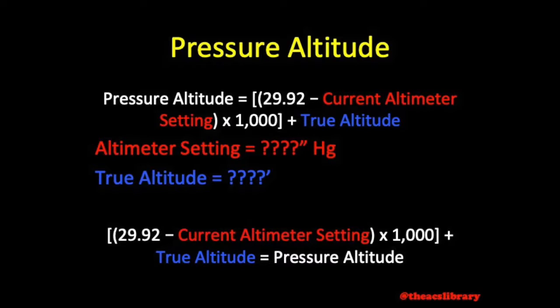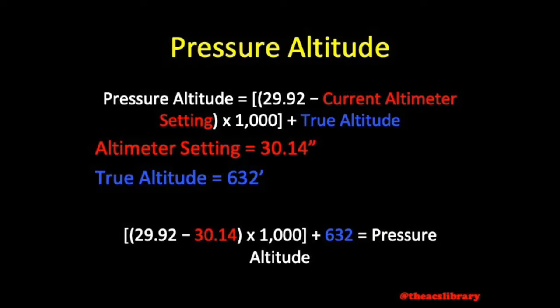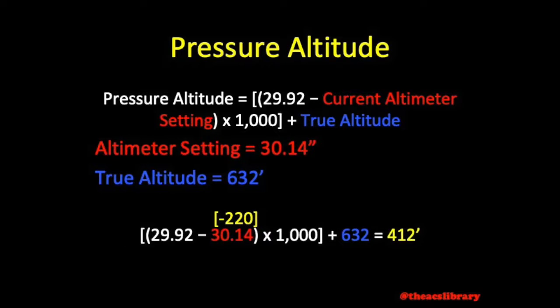In this example, we will find the pressure altitude necessary to calculate takeoff distance. Because we are calculating takeoff distance, we should find the current pressure altitude at the runway surface. Let's assume the METAR is reporting an altimeter setting of 30.14 at an airport with a field elevation of 632 feet MSL. Based on the current altimeter setting of 30.14, after some simple arithmetic, we add negative 220 to our airport elevation of 632 feet. This results in a pressure altitude of 412 feet.